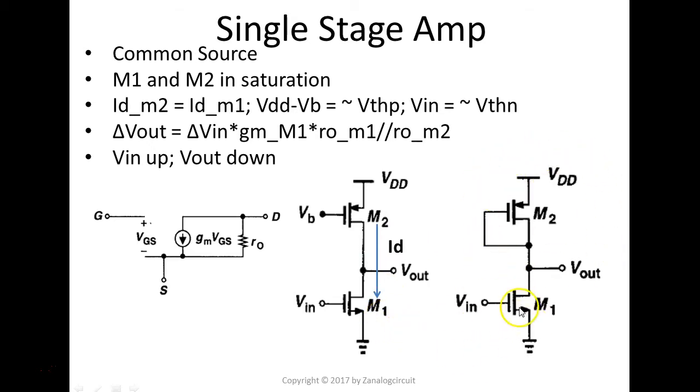So this one is just a little small exercise with the common source topology. So the question is, what is the gain from VIN to VOUT? Think about it for a minute.